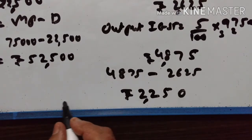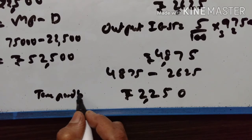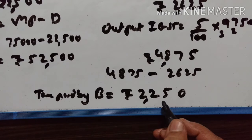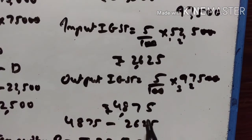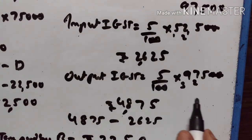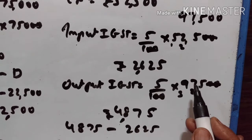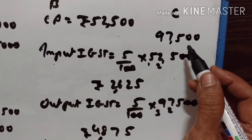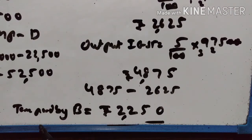Tax paid by dealer B to the government is Rs.2,250. Input GST is calculated on cost price and output GST is calculated on selling price, that is the cost price of customer C. So the tax paid by B to the government is Rs.2,250.